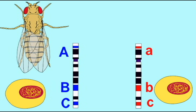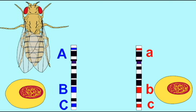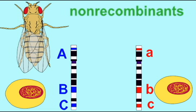Therefore, these phenotypes are referred to as the non-recombinant phenotypes. This is what the original parent in the parental strain possessed, and so when these are passed down, all of these alleles remain linked to each other. This is the non-recombinant condition.